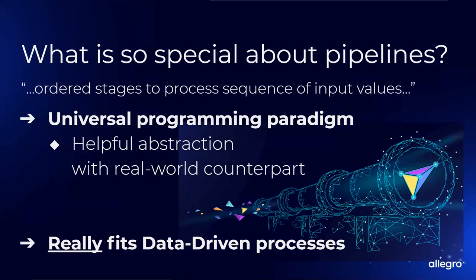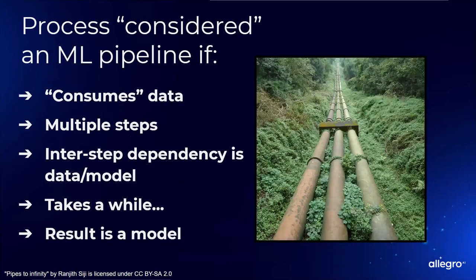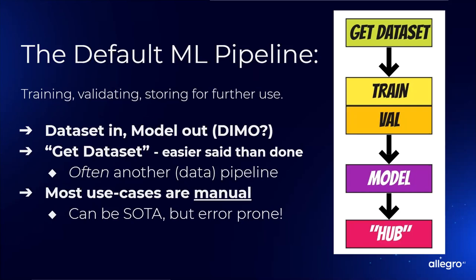Let's begin with what's so special about pipelines — why everybody's talking about them. Well, it's a universal programming paradigm. Stuff goes in, stuff goes out, something happens in the middle, and it's all very well controlled. It also really fits data-driven processes, for example machine learning pipelines. Not every pipeline is a machine learning pipeline — it's a machine learning pipeline if it consumes data, has multiple steps, and those steps are dependent only on the data or intermediate models. Most machine learning pipelines take a while, and all of them result in a model.